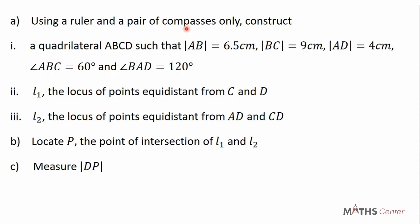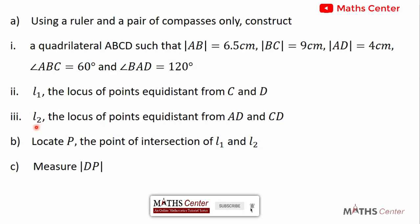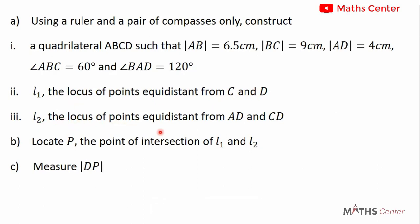Using a ruler and a pair of compasses only, construct a quadrilateral ABCD such that AB is 6.5 cm, BC is 9 cm, AD is 4 cm, angle ABC is 60 degrees, and angle BAD is 120 degrees. Construct L1, the locus of points equidistant from C and D. Construct L2, the locus of points equidistant from line AD and line CD. Locate P, the point of intersection of L1 and L2, and measure the length of DP.